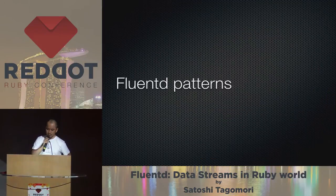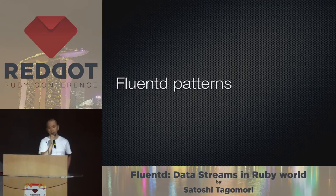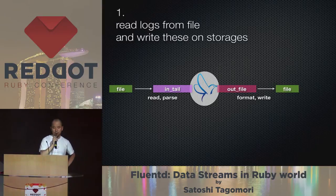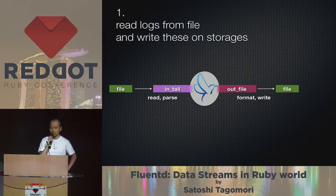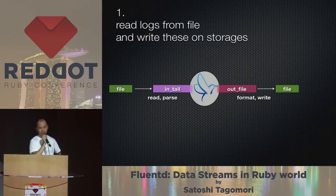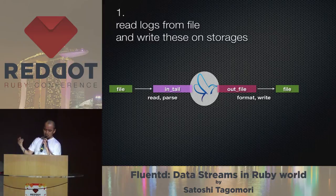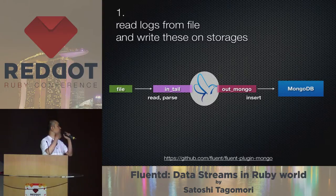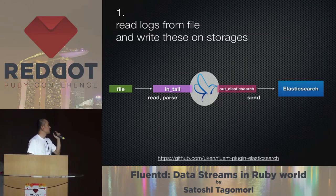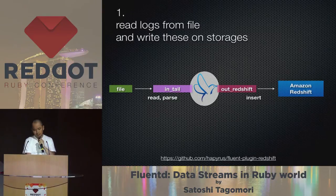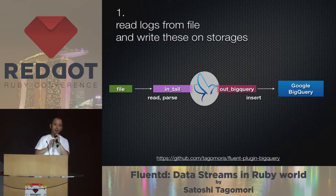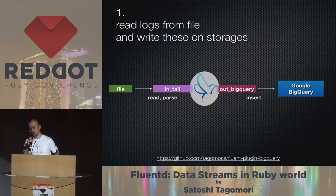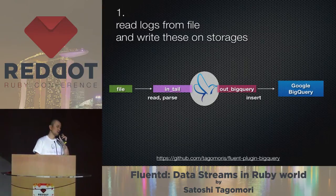The first and most simple pattern: Fluentd reads lines from a file, parses them into Fluentd events, formats these events, and writes them line-by-line into files. By changing the output plugin, we can write events to any storage system or external middleware like MongoDB, MySQL, Elasticsearch, Hadoop HDFS, Amazon S3, Amazon Redshift, Google BigQuery, and many more.